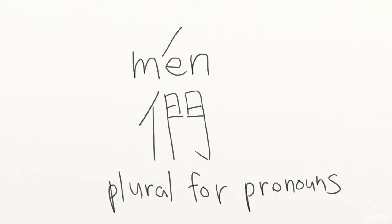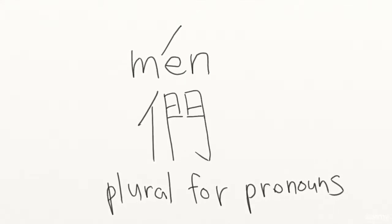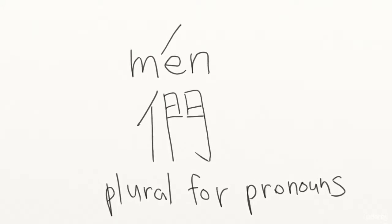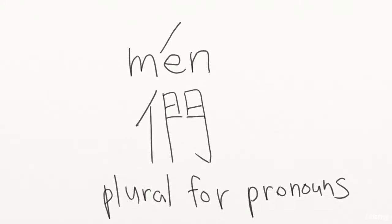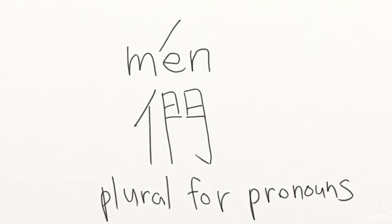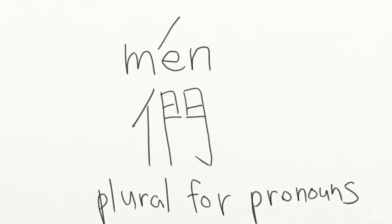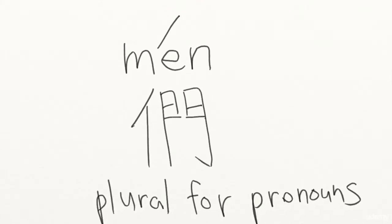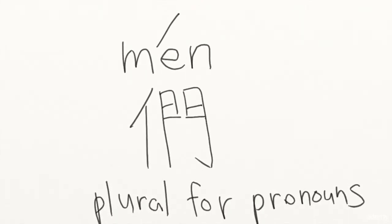The way to say us, we, they, them, or the plural for you is simply by adding 们 (men) at the end of each pronoun. So you would say 我们 for we, 她们 for they, and 你们 for the plural of you. Now you try it.